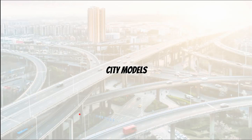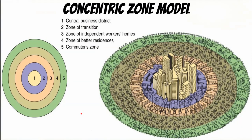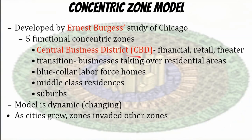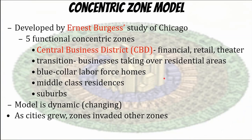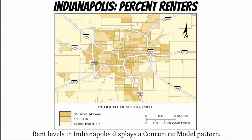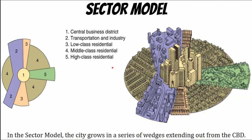Now let's look at city models — these are things they often ask about on the test. They try to describe the growth and change of a typical American city. The first is from the 1920s: the Concentric Zone Model, which focuses on the CBD or Central Business District. It was developed by Ernest Burgess, based around Chicago. He realized the most important node was in the center, and as you get further away, land value decreases using bid-rent theory. It's a dynamic model, and you can see the concentric zone displayed in Indianapolis.